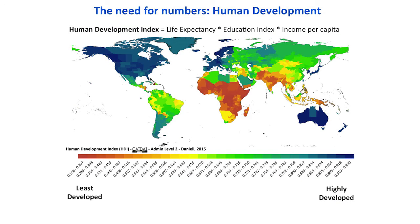One such metric is the Human Development Index, which is a combination of life expectancy, education and income. Highly developed is shown in blue, least developed in brown, and we can see that even across the USA there are huge differences across states in development, and this changes the loss.